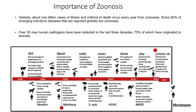Looking at zoonotic diseases in the recent past, globally about 1 million cases of illness and millions of deaths occur every year from zoonotic infections. 60% of these are emerging infectious diseases reported globally as zoonosis. There are over 30 new human pathogens detected in the last three decades, 75% of which have originated in animals, which is a huge cause of concern.